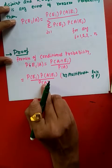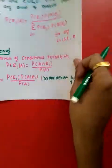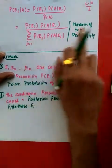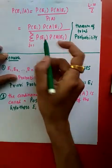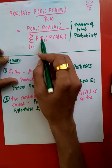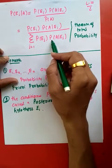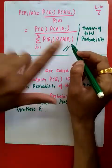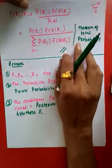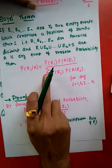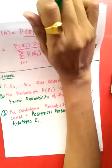For the denominator, P(A), we apply the total probability theorem. So P(A) = summation of j equals 1 to n of P(Ej) multiplied with P(A | Ej). This is how Bayes' theorem is proved. You just have to remember this equation — as you practice more numericals based on this theorem, it will become easy.